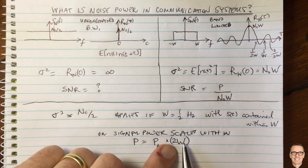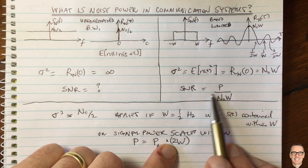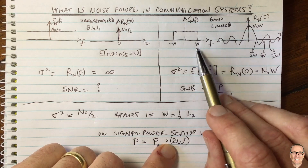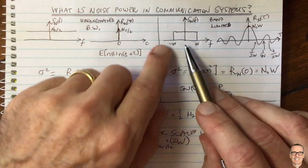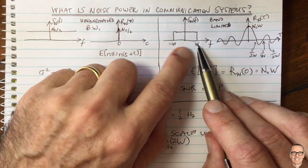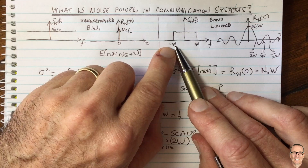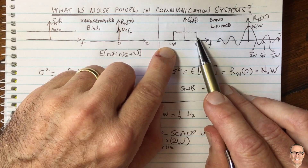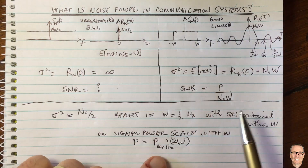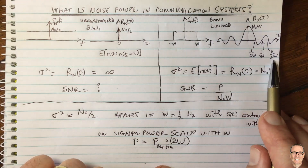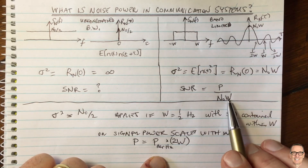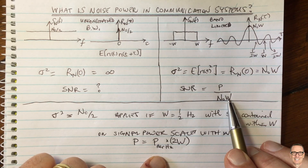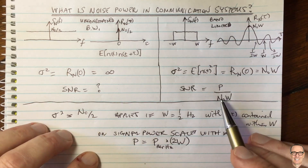One final point: the factor of 2 that sometimes appears or disappears in SNR formulas can easily be explained by the definition of W. If you define the band-limited spectrum from −W/2 to +W/2, the total bandwidth is W and the 2s in the formulas disappear or shift accordingly. You can work this through by simply replacing W with W/2, as is sometimes done in certain textbooks.